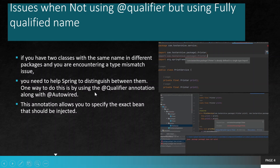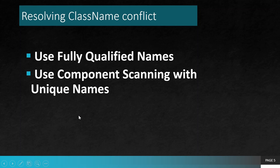To resolve these issues, most of the time people should avoid using the same class name. However, in Spring there are cases where applications are built with the same class name in different packages. In those cases, use a fully qualified name to avoid conflict, then use a qualifier annotation or bean name annotation to map which class a bean is referring to. The conflict resolution is as simple as in Java modular programs: use a fully qualified name and component scanning with a unique name.